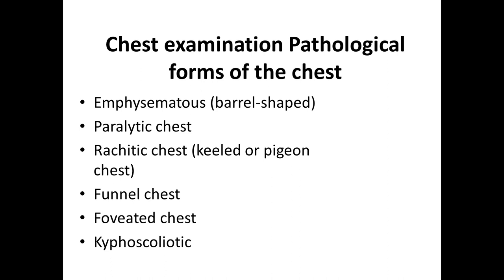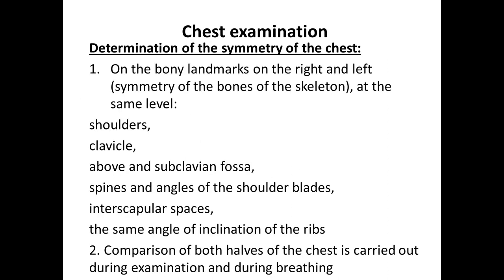Pathological forms of the chest include: emphysematous or barrel-shaped chest, seen in emphysema or bronchial asthma; paralytic chest; rachitic chest; funnel chest; forward chest; and kyphoscoliotic chest.